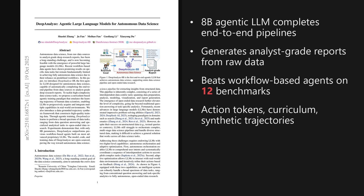Wrapping up, two takeaways stand out. DeepAnalyze 8B shows that explicit action tokens and a curriculum agentic training schedule unlock end-to-end autonomous data science, and the compact model still surpasses workflow agents. The broader implication is a shift from hand-designed pipelines to trainable, open foundations for analytics. Thanks for listening. I'm Alex, signing off.